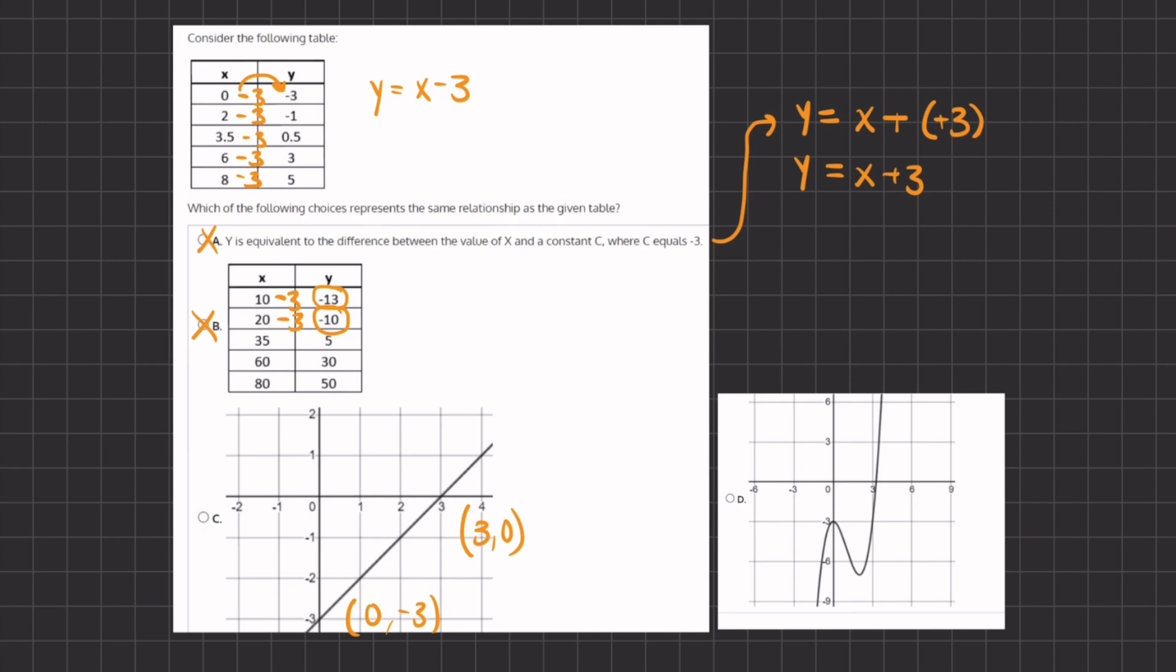We have y, which is 0 equals x, and instead of x, we're going to be writing 3 minus 3. So that gives us 0 equals 0, which is correct.